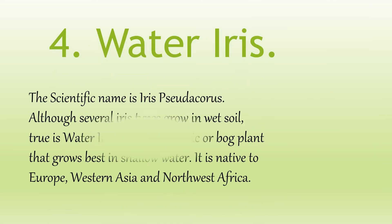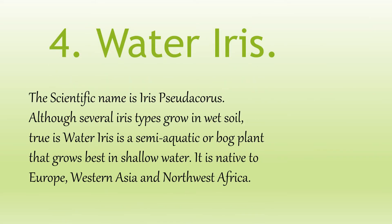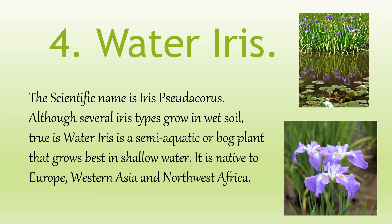Water Iris. The scientific name is Iris pseudacorus. Although several iris types grow in wet soil, true water iris is a semi-aquatic or bog plant that grows best in shallow water. It is native to Europe, Western Asia, and Northwest Africa.